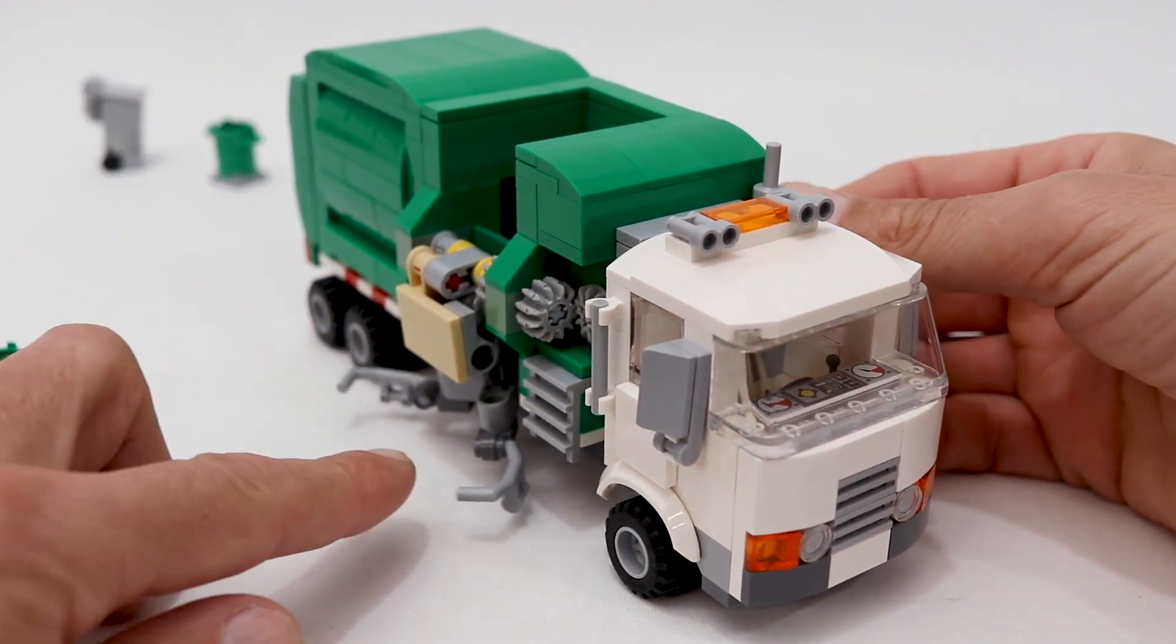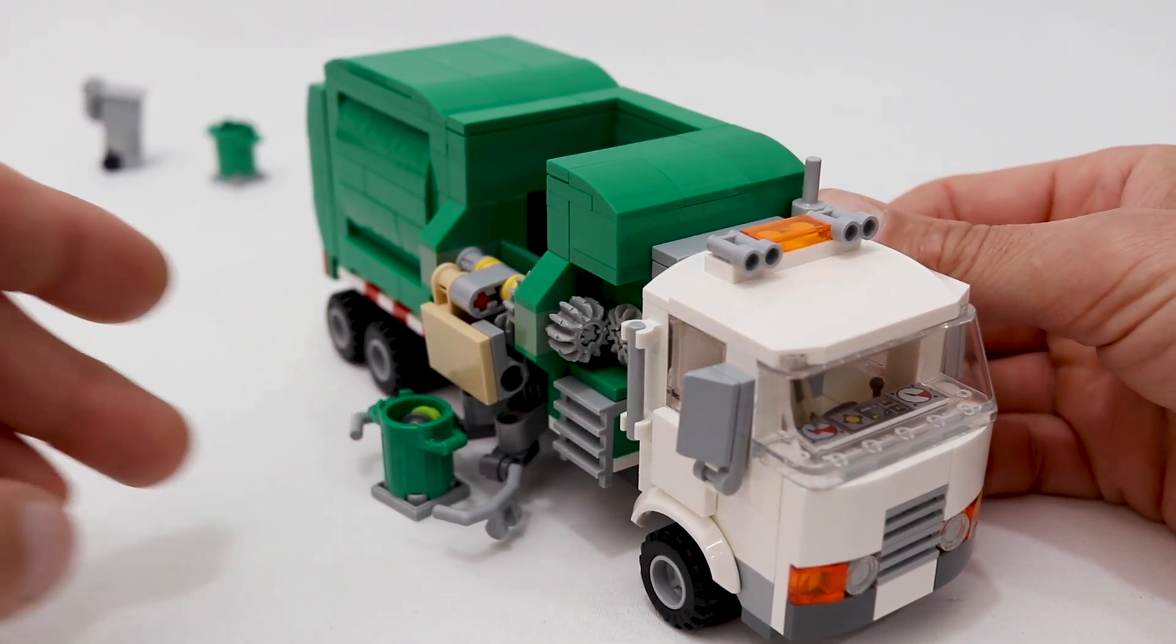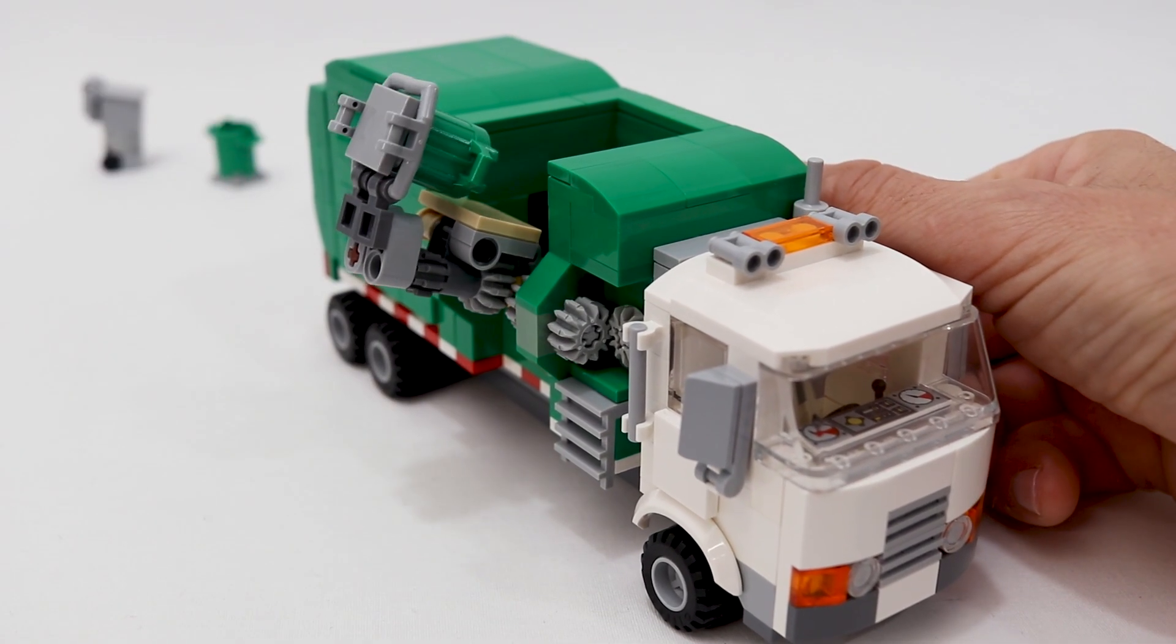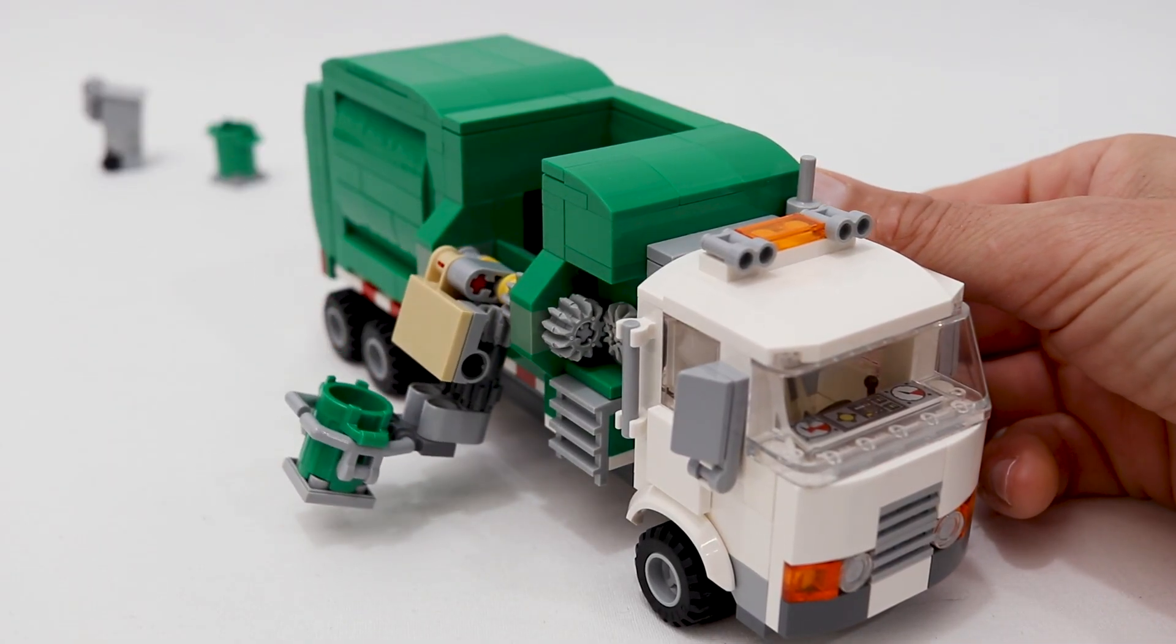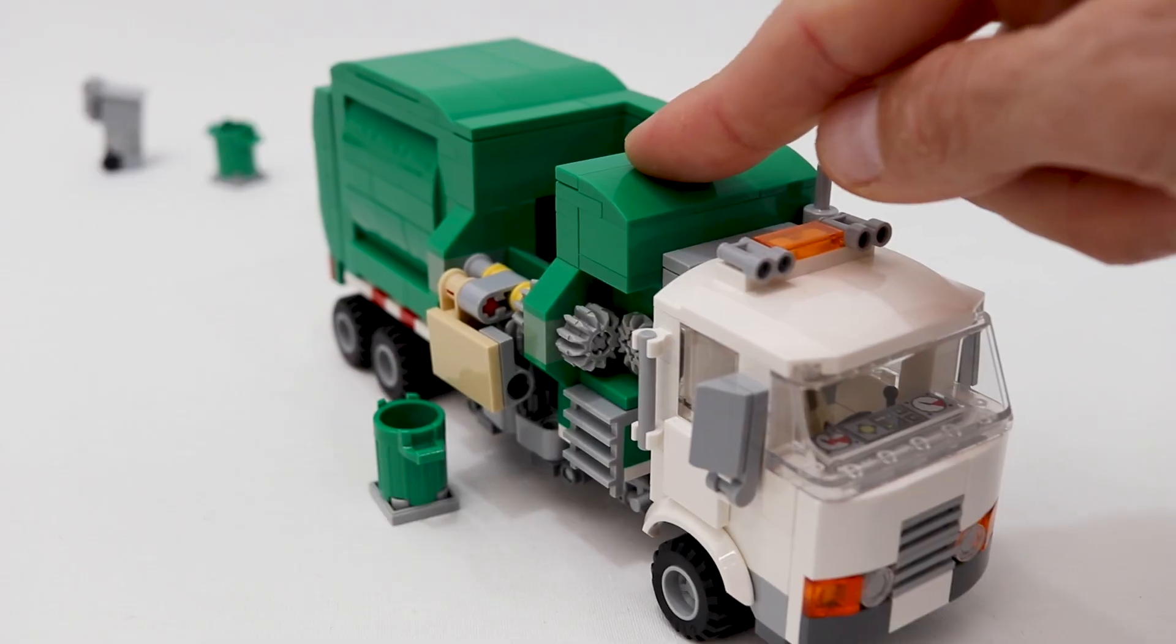When you rotate the knob, the arms come out and grab the trash bin and then lift it up and dump its contents into the hopper. And when you rotate the knob the other way, the bin is lowered and the arms are retracted back underneath the truck and you can drive away.